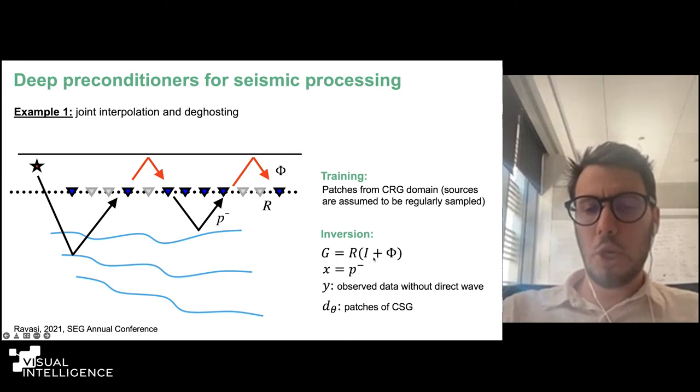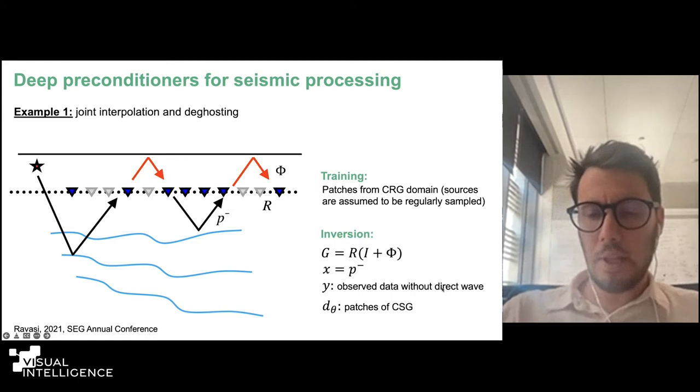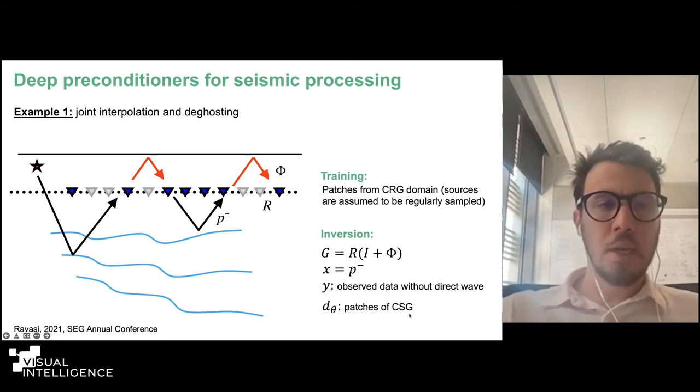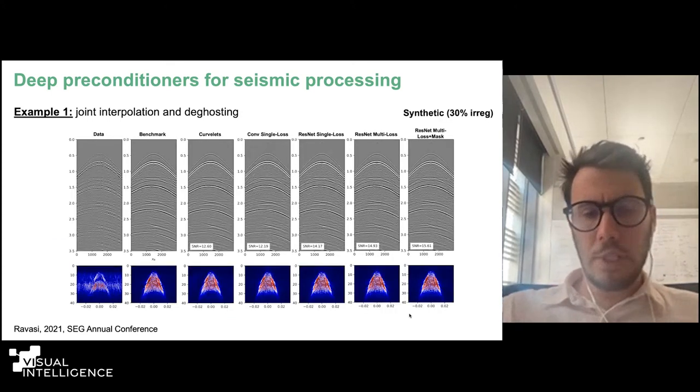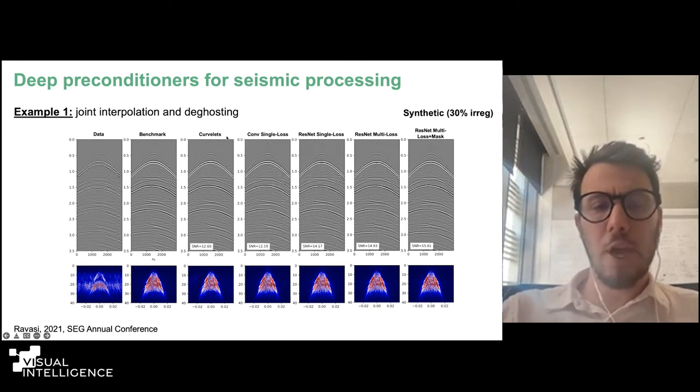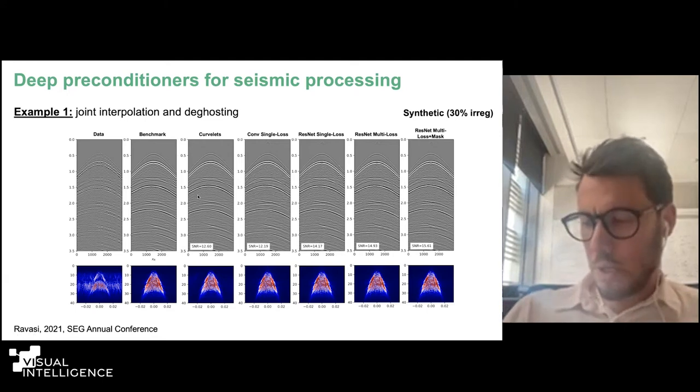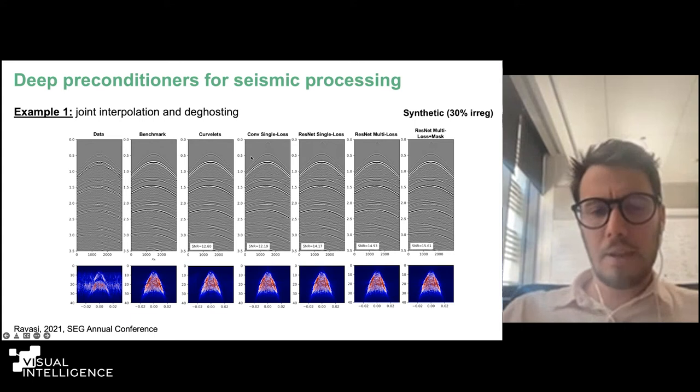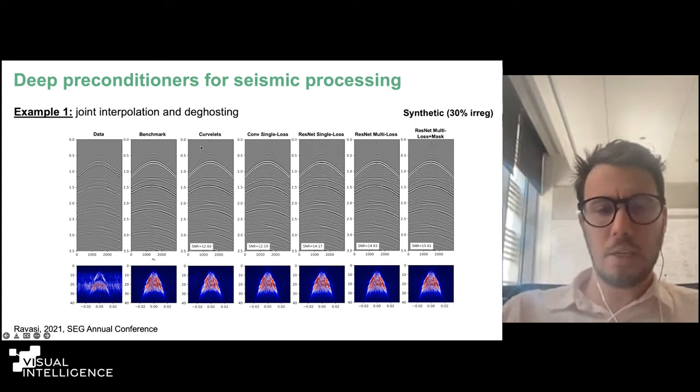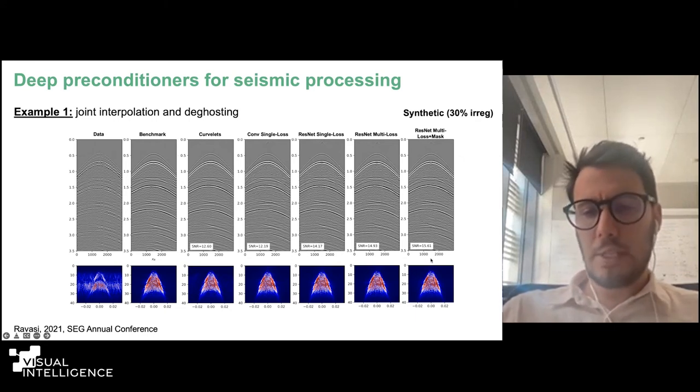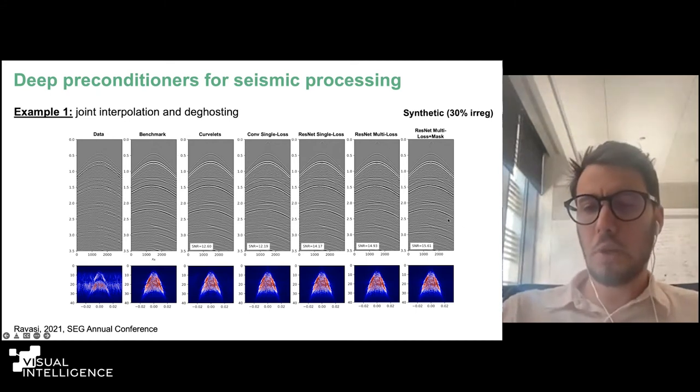The inversion part is fairly simple. We choose the operator to be a ghosting operator plus a restriction. The observation is obviously the data without the direct wave. I'll not discuss this in detail, why it's needed. And what we want to recover is the upgoing component. And here we're going to patch in the common shot gather because we do this interpolation shot gather by shot gather. The results that we obtain for a synthetic example is shown in this slide. Sorry, it's a bit busy, but I really wanted to show how you can start from something that is not as good as state-of-the-art algorithms. I also like to remind people that in geophysics, people were not stupid before deep learning and not stupid today. So we have very competitive algorithms. Beating state-of-the-art is not easy. And in fact, our first attempt did not beat the state-of-the-art, which is a curvelet sparsity promoting inversion.